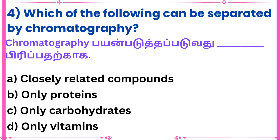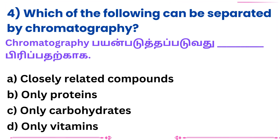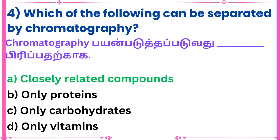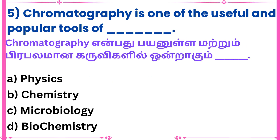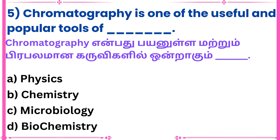Fourth question: Which of the following can be separated by chromatography? Answer: Closely related compounds. Fifth question: Chromatography is one of the useful and popular tools of — Answer: Biochemistry.